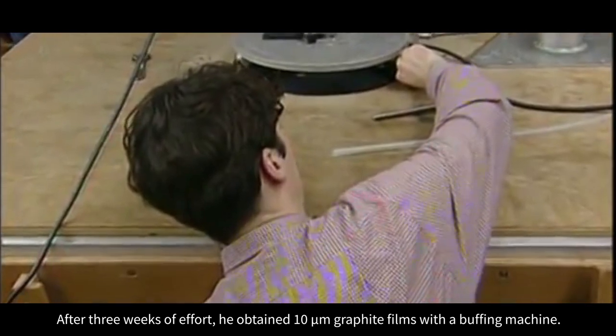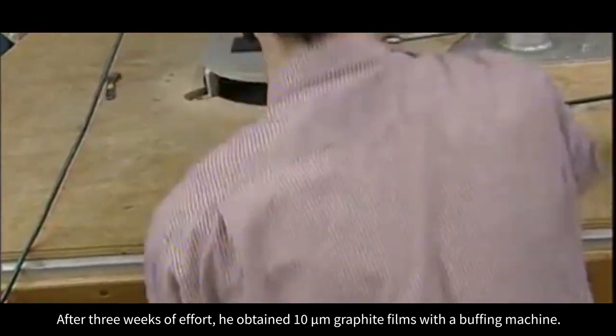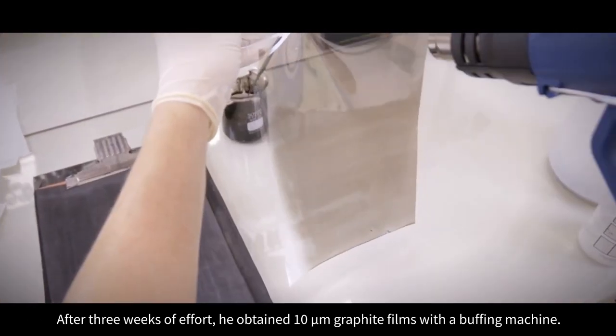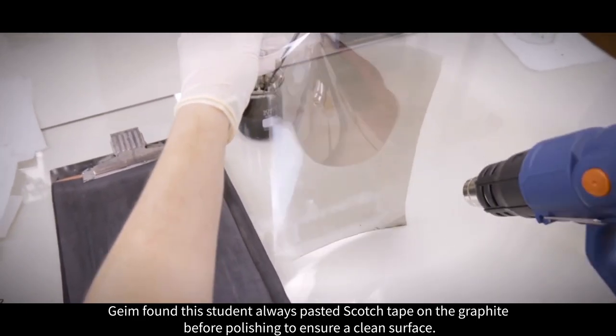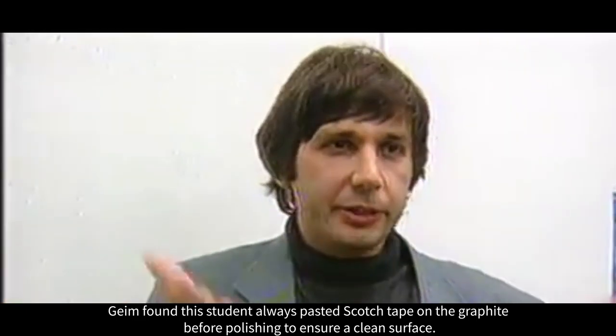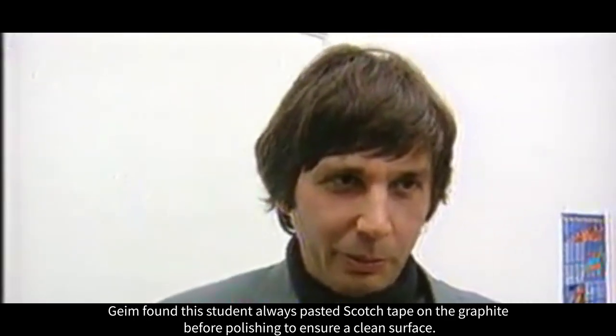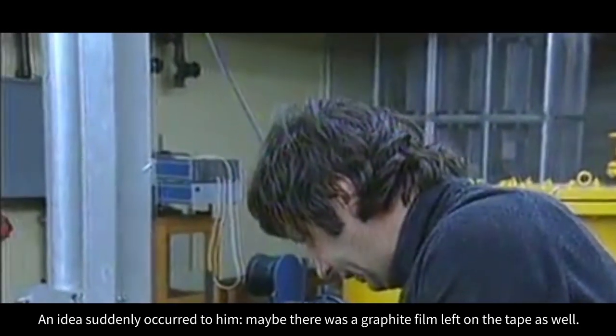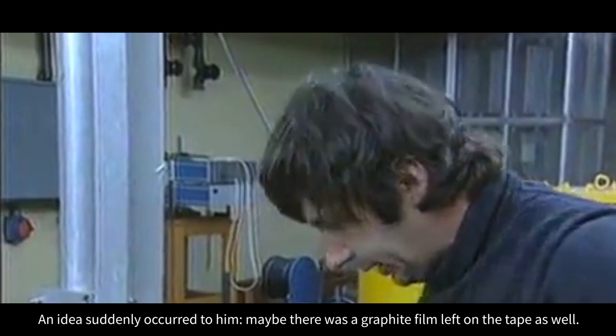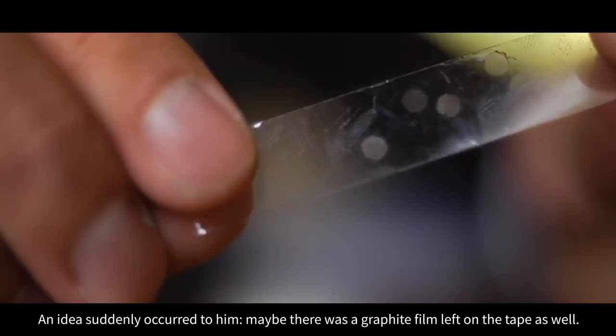One of his students was asked to peel away more films from the graphite. After three weeks of effort, he obtained 10-micrometer graphite films with a buffing machine. Geim found this student always pasted scotch tape on the graphite before polishing to ensure a clean surface.